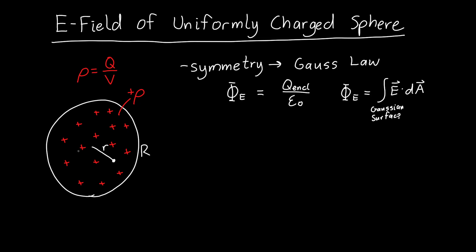The first question is what kind of Gaussian surface do we want to use. Because this situation has spherical symmetry, we'll use a sphere. We place our Gaussian sphere inside the charged sphere with radius little r — the radius at which we want to find the electric field.